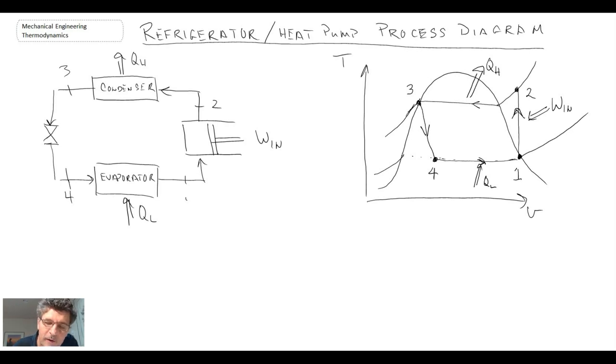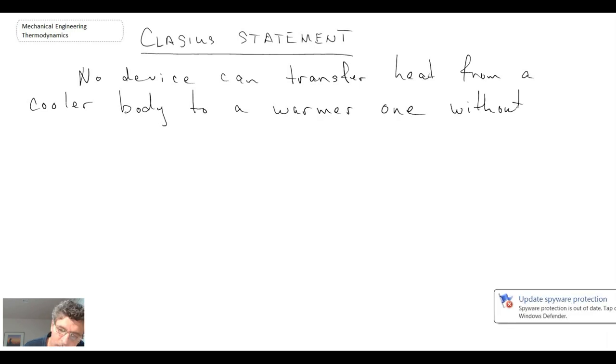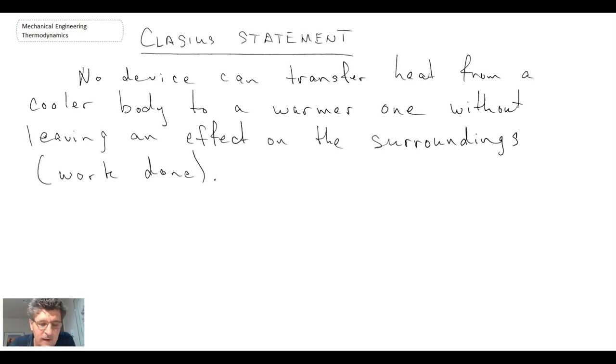Final thing that I want to say, we looked at the Kelvin-Planck statement when we were looking at heat pumps. Now we're going to look at the Clausius statement. And what the Clausius statement says is that no device can transfer heat from a cooler body to a warmer one without leaving an effect on the surroundings, and that effect would be the work that you have to do on the process. So you need to do work in order to move heat from the cold to the hot, which is the opposite way that we would normally see heat flowing. So we're in a way defying nature by doing this, but we have a cycle that enables us to do it.